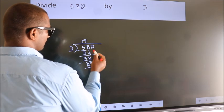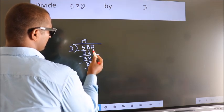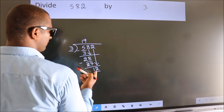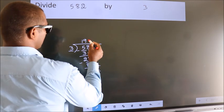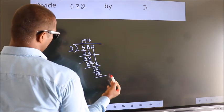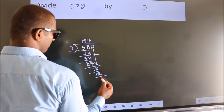After this, bring down the beside number. So, 2 down. So, 12. When do we get 12 in the 3 table? 3 times 4 equals 12. Now we subtract. We get 0.